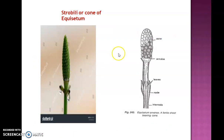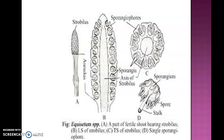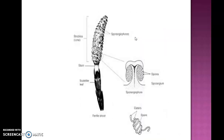Here is the structure of the cone in longitudinal section. Below the cone, scales form the annulus. The cone has a central axis on which numerous sporangiophores are arranged. Each sporangiophore has a stalk and a head. At the base of the head, the sporangium is present. Each sporangium contains numerous spores of similar type.